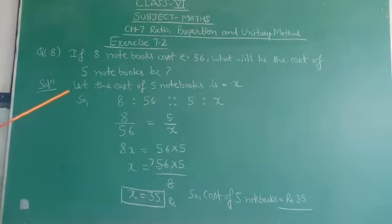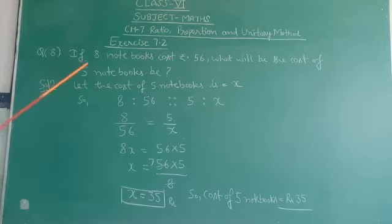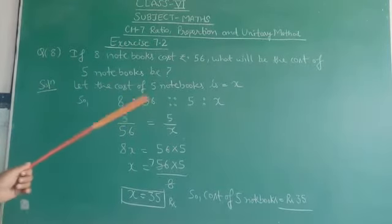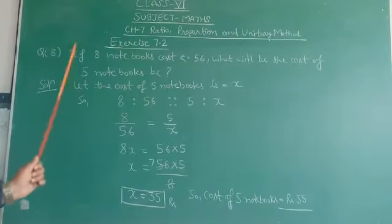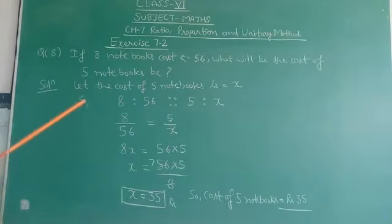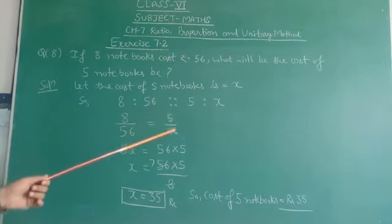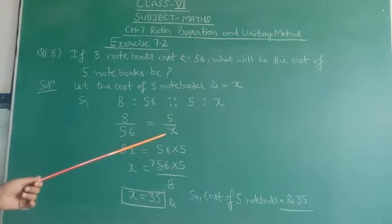We can write it as such: 8 notebooks cost is 56, proportion to 5 notebooks cost is X. Then we write in fractional form, 8 upon 56 is equal to 5 ratio X, that is 5 upon X.